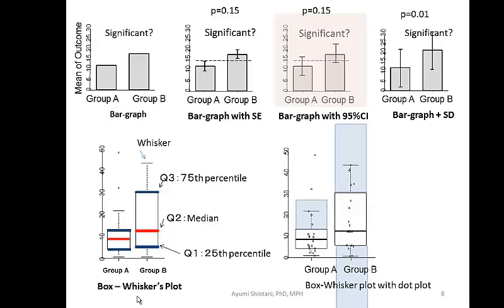Nature Cell Biology also asks that you include the sample size for each group in the figure, and if possible, put the p-value directly in the figure so readers don't have to search for it in the footnote.